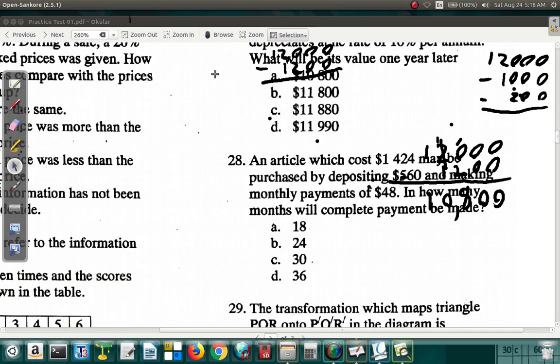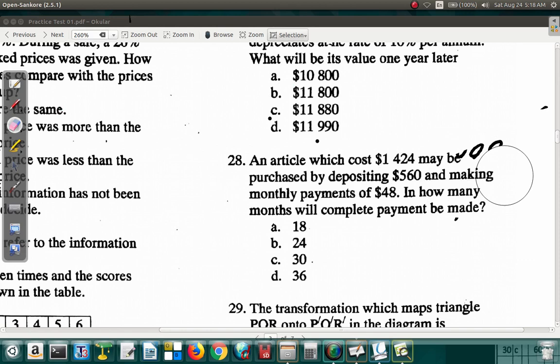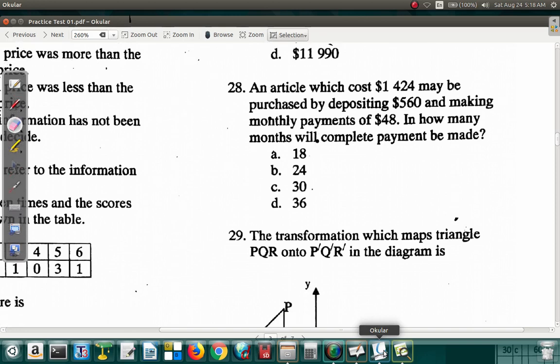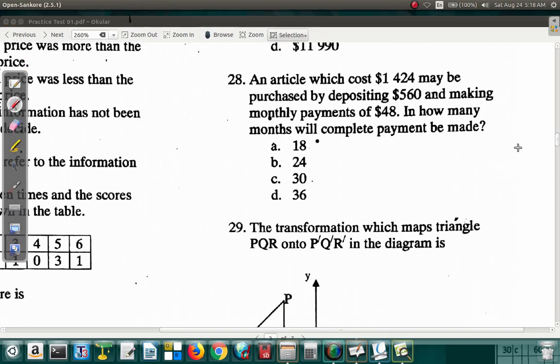Let's look at question 28. An article which costs $1,424 may be purchased by depositing $560 and making monthly payments of $48. In how many months will complete payment be made?